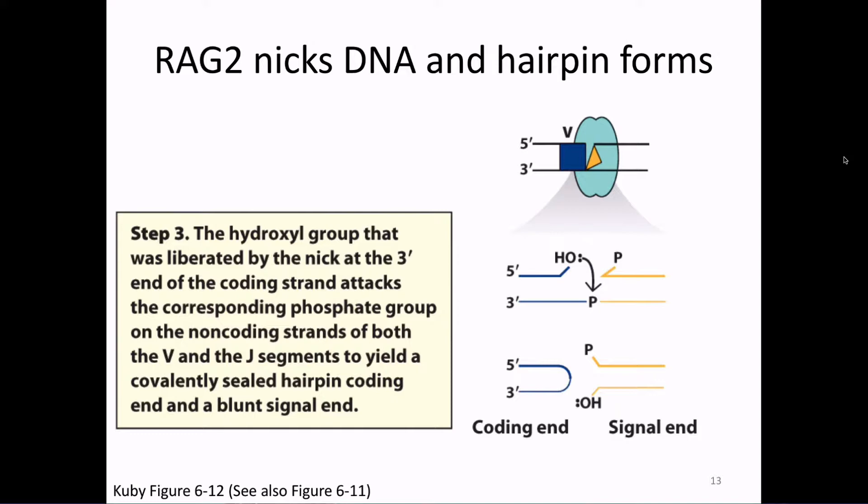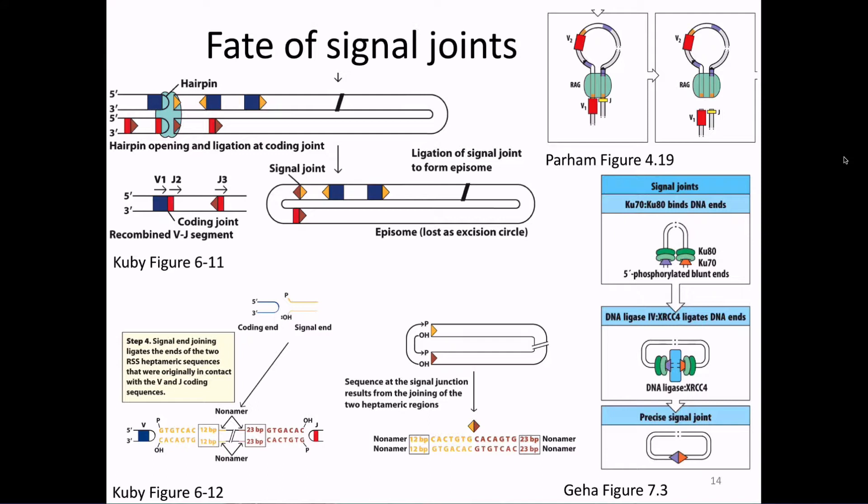The signal joint is really easy. The two signal joints get ligated together — that's it. Those two signal joints were made really nicely with clean phosphate and hydroxyl ends, no weird messiness. You just take those two DNA ends and ligate them together with a ligase, and the signal joint is done. If the RSSs were in opposite directions, you make a DNA circle that gets thrown away.